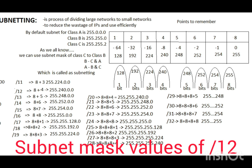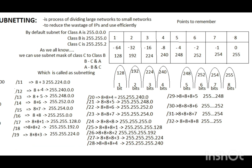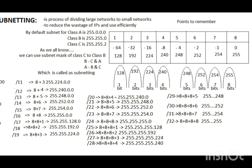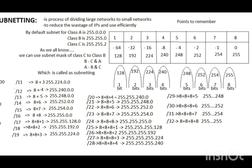Slash 12 is 8 plus 4 bits. For 8 bits, the value is 255. For 4 bits, the value is 240. So the subnet mask value of slash 12 is 255.240.0.0. Slash 13 is 8 plus 5 bits. For 8 bits, 255; for 5 bits, 248. So the subnet mask value of slash 13 is 255.248.0.0.